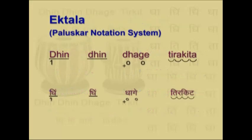If you look at the theka of Ektaal, where you get dhin dhinda dhage — dhage is one full beat, but dha is half and ge is half. So you write a circle under dha and under ge, indicating that dha is a half beat and ge is a half beat. This will be further explained in the theka writing.